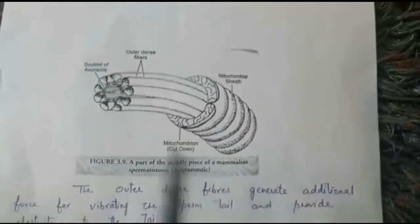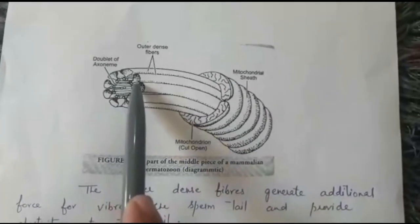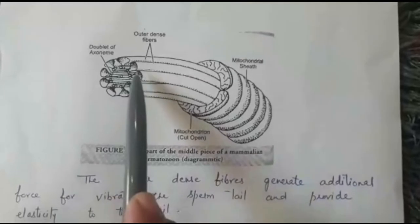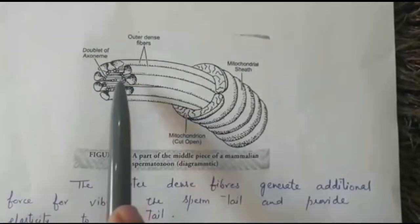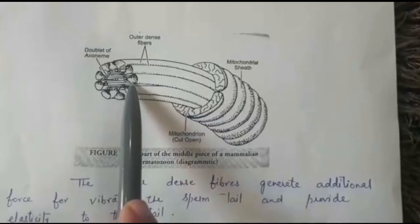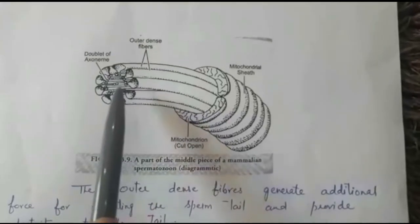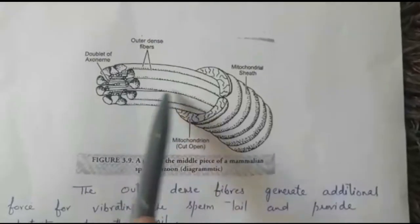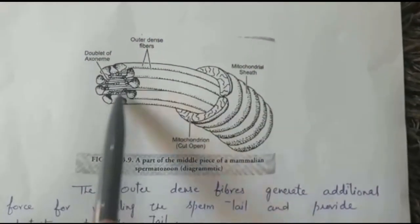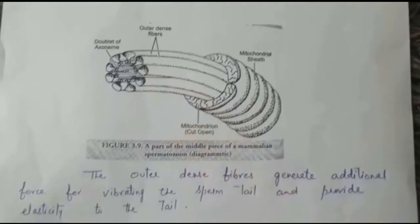In mammalian sperm, outside the doublets there are nine outer dense fibers. These dense fibers provide additional force for vibration of the tail and provide elasticity to the tail. They are present specifically in mammalian sperm.